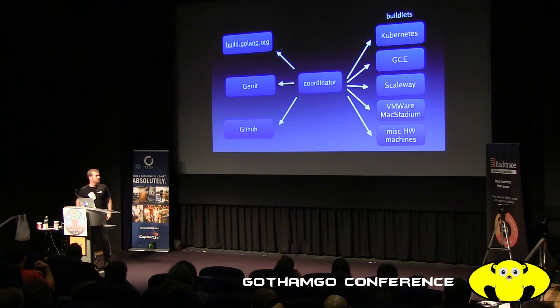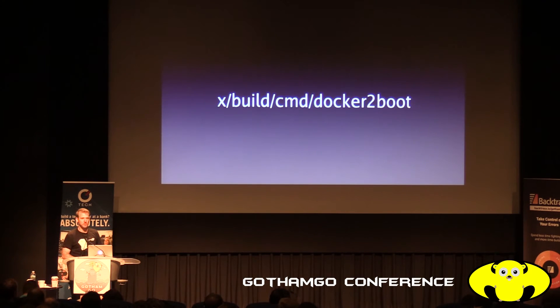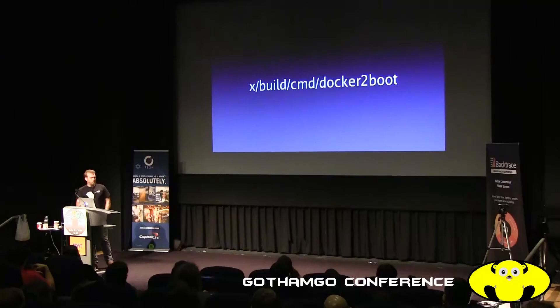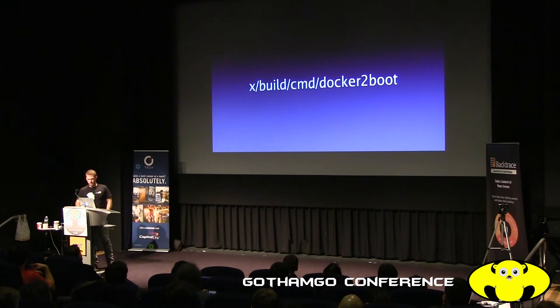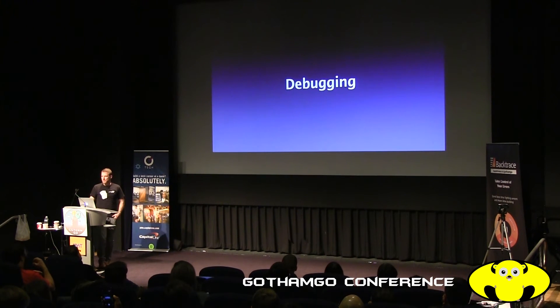We have people donating machines: five PowerPC machines, five ARM64 machines, and IBM donates s390x machines — some static machines just sitting idle waiting for work. Then we have VMs and containers created on demand. We create some of these using docker-to-boot, a tool that takes a Dockerfile, builds the image, and creates a bootable VM from it without Docker. We're increasingly using Kubernetes instead, but used this for a long time.